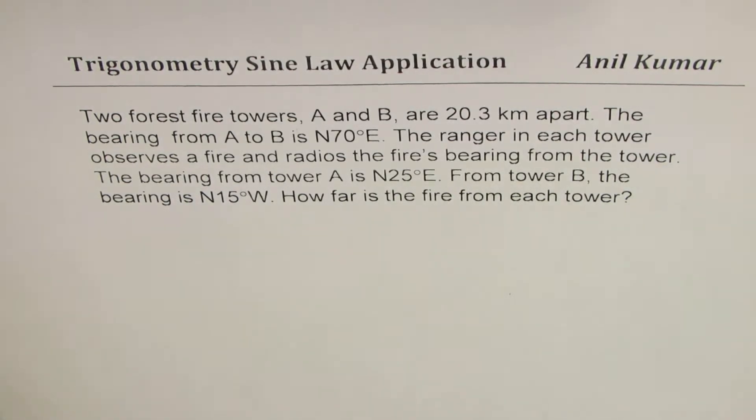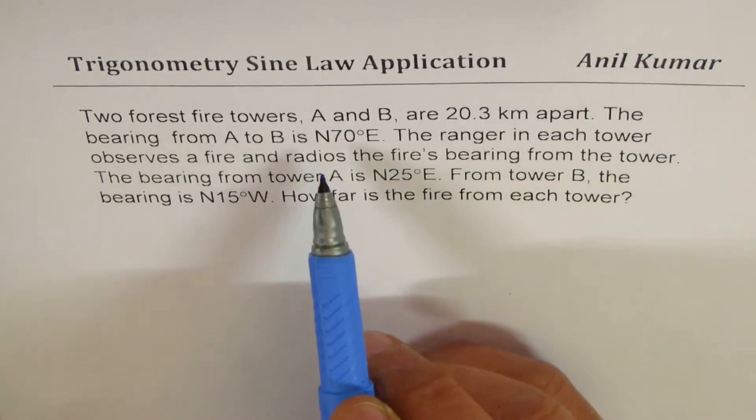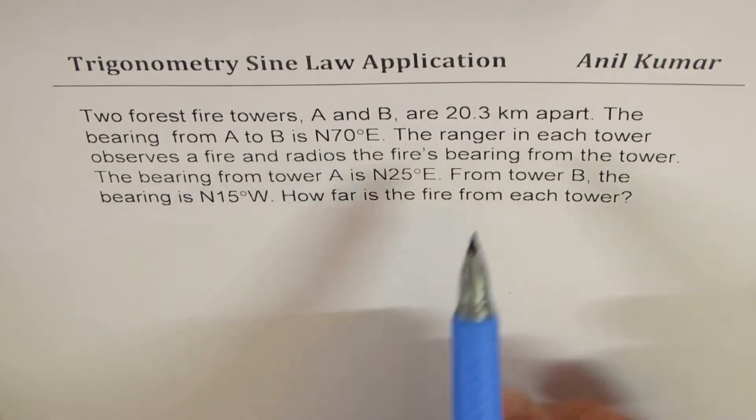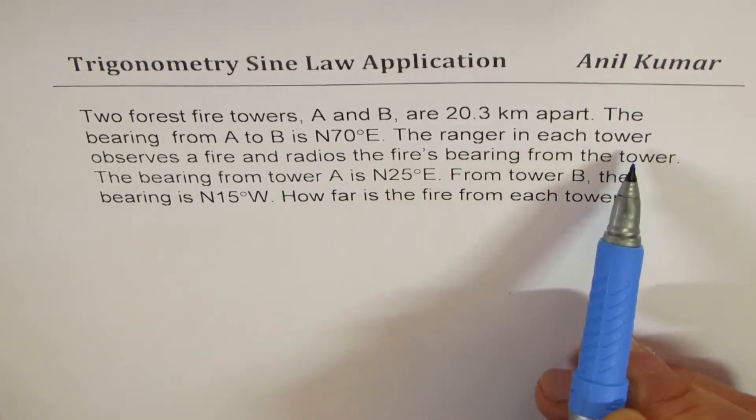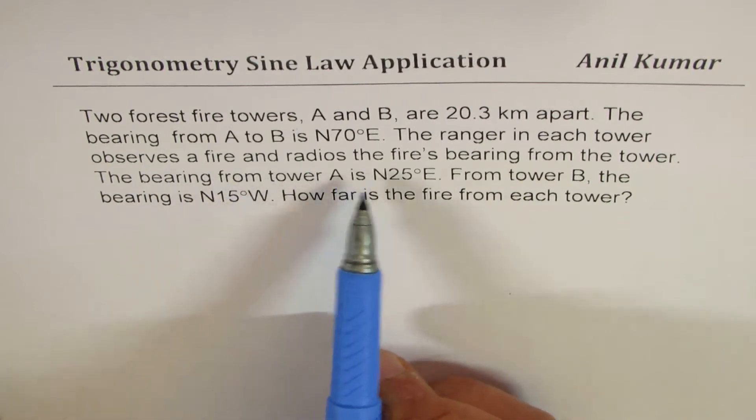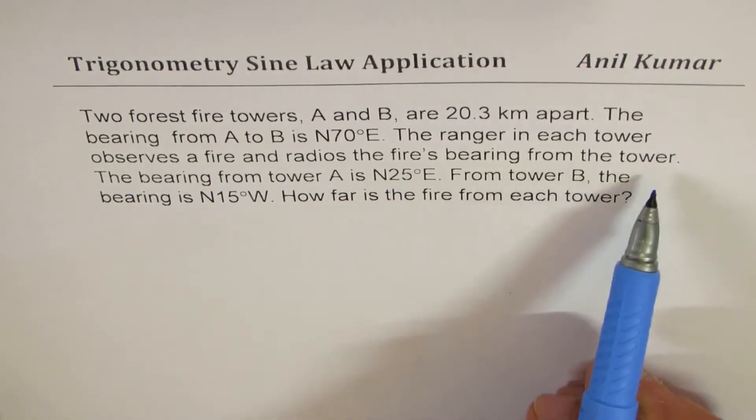Two forest fire towers A and B are 20.3 kilometers apart. The bearing from A to B is 70 degrees east of north. The ranger in each tower observes a fire and radios the fire's bearing from the tower.